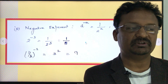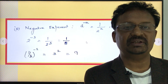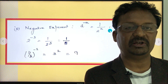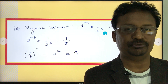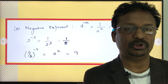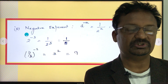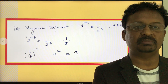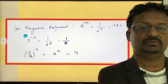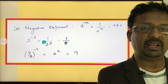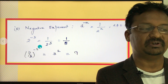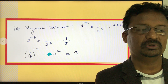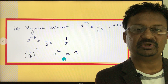Rule two is called the negative exponent rule. a to the power of minus n equals one divided by a to the power of positive n, where a is not equal to zero — because if the denominator becomes zero, it is undefined. A good example: 2 to the power of negative 3 equals one divided by 2 to the power of positive 3, which equals one-eighth. Another example: one-third to the power of negative 2 equals one divided by one-third to the power of positive 2, which equals nine.